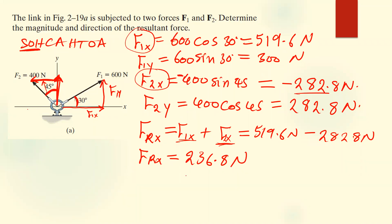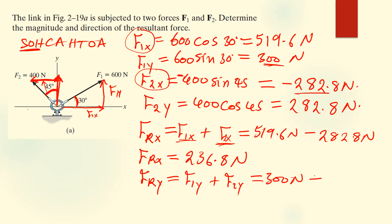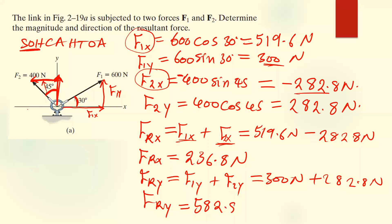We also need to find the resultant Y component by combining F1y plus F2y. F1y is 300 Newtons, and F2y is 282.8 Newtons. Adding the two together gives us 582.8 Newtons. So these are the two resultant components we'll use to find the final resultant and direction.